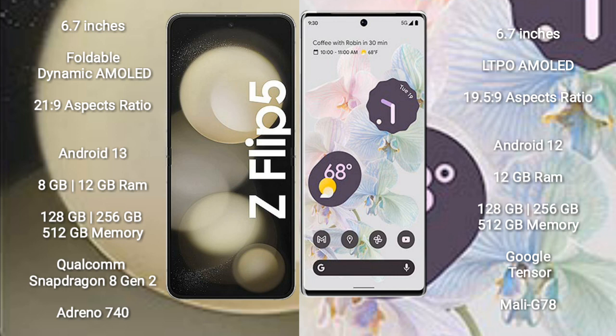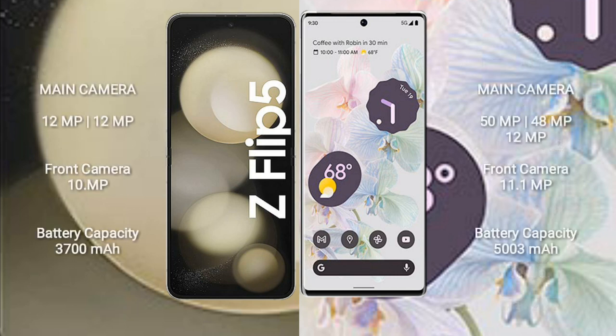The Google Pixel 6 Pro comes with 12GB RAM and 128GB to 512GB internal storage, a Google Tensor processor, and Mali-G78 GPU. The Samsung Galaxy Z Flip 5 features a dual rear camera setup: 12MP plus 12MP, and a 10MP front camera.